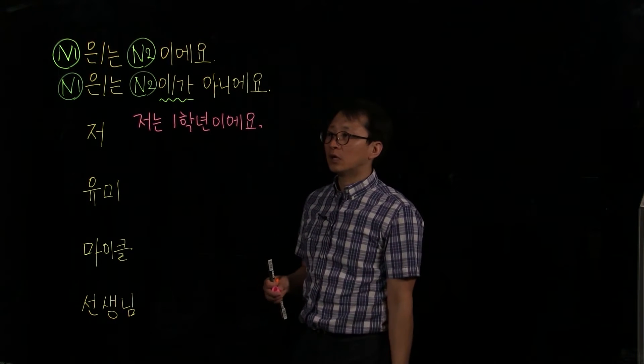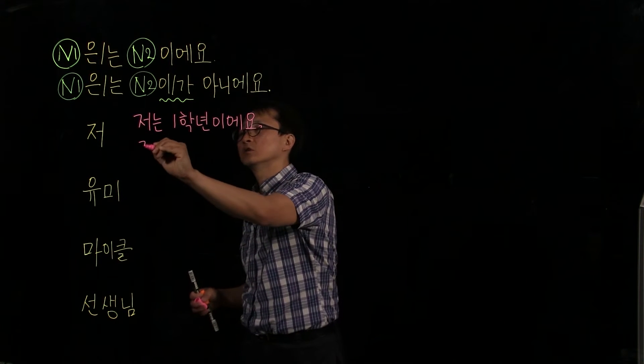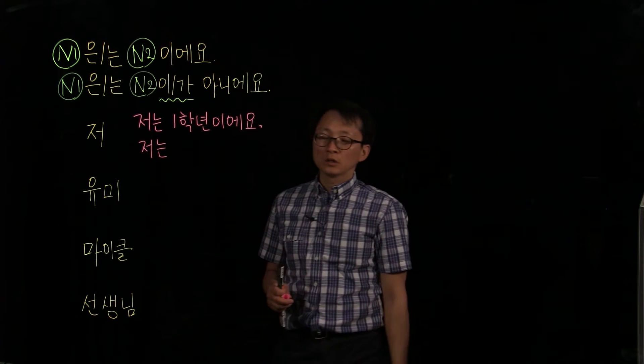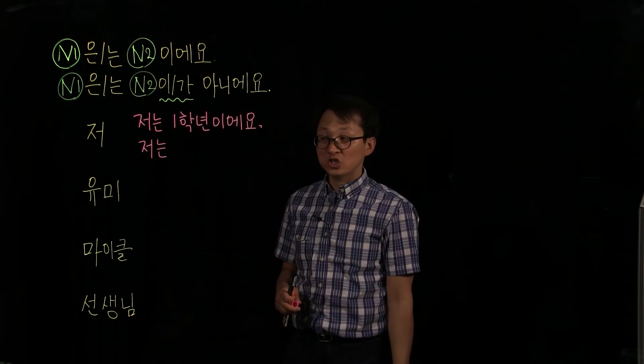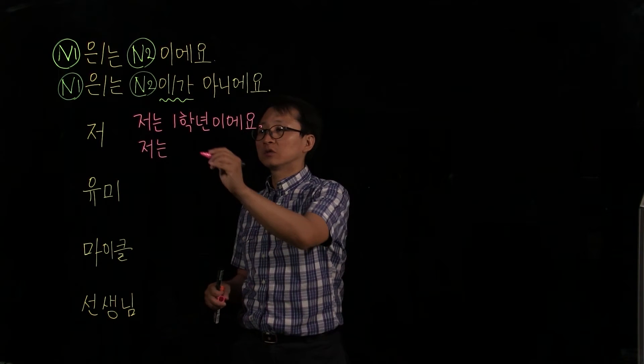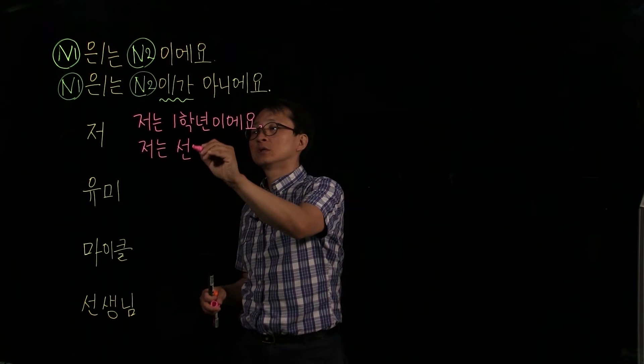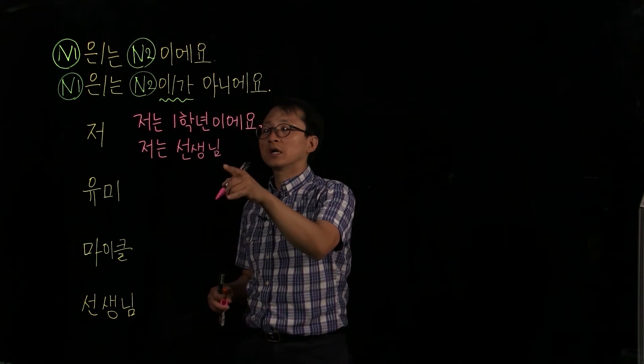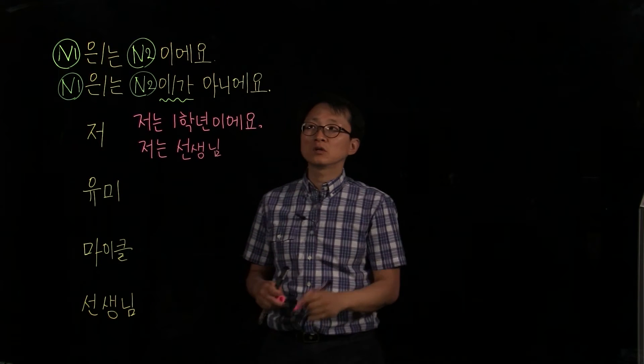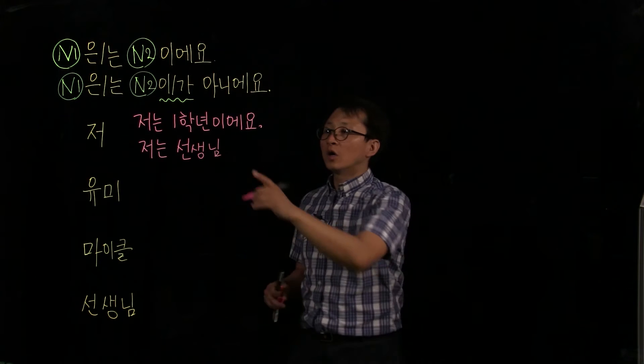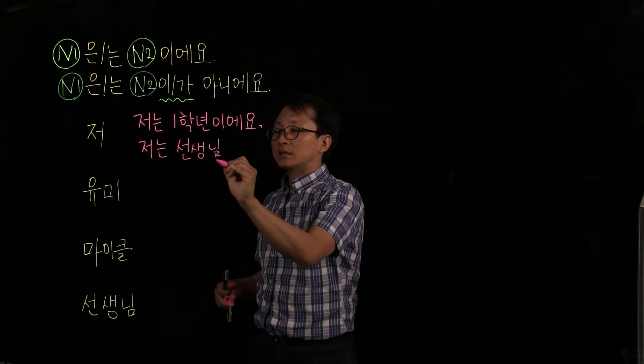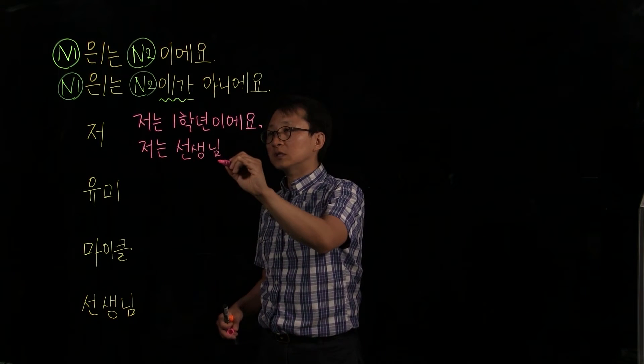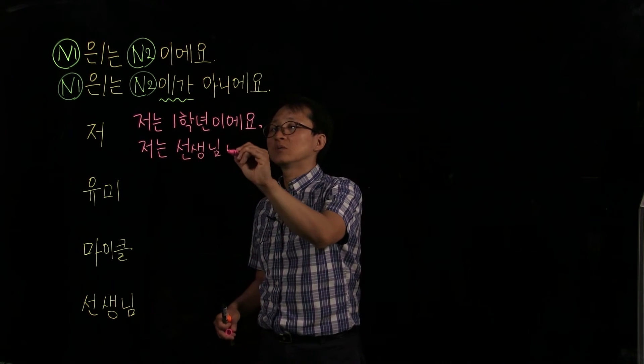And let's say what you are not. Then you talk about yourself, 저는. 저는, let's say I am not teacher. Then what's the word teacher? 선생님. This is what you are not. And after this noun, you need one of these particles. So take a look at the last syllable and see if it has a final consonant, and it has a final consonant. Then 저는 선생님이.